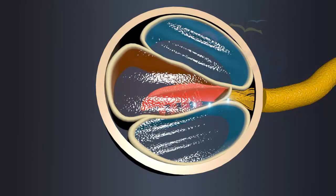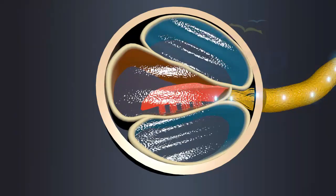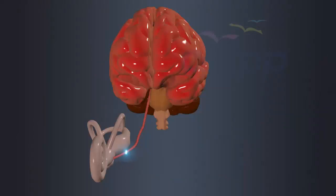Auditory nerves carry these electrical signals generated by the hair cells and transmit them to the auditory processing centers in the brain where these signals are interpreted as sounds.